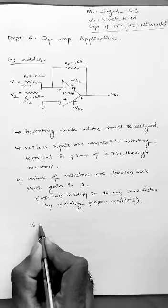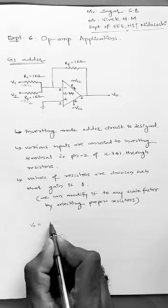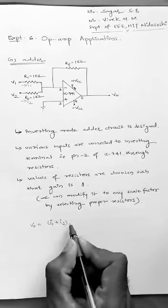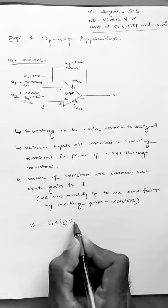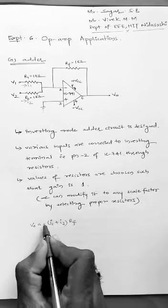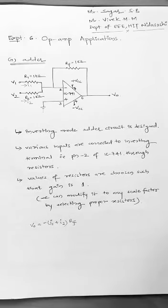So V0 will be equal to the addition of two currents I1 and I2, multiplied by the resistance, that is RF. I will assign a negative sign here, and this is because the inputs are connected to the inverting terminal. Hence, I am calling it an inverting mode adder circuit.